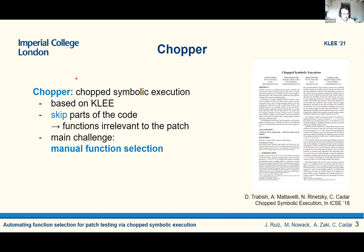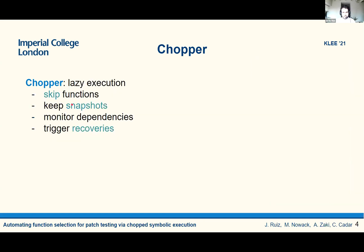Currently, the main challenge with Chopper is that it requires manual function selection. That is, you need to have an expert user that selects which functions should be skipped. In a nutshell, Chopper is lazy execution of skipped functions. First, you select functions that you want to skip.